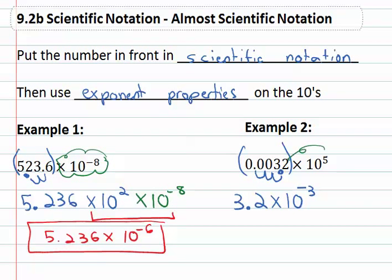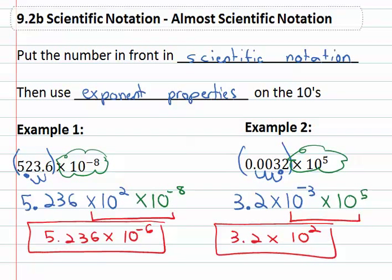Again, don't forget we still have that times ten to the fifth at the end, because now what we'll do is use our exponent properties on the tens. This gives us 3.2 times ten, adding the exponents, negative three plus five is two. 3.2 times ten squared is the correct scientific notation form of our number.